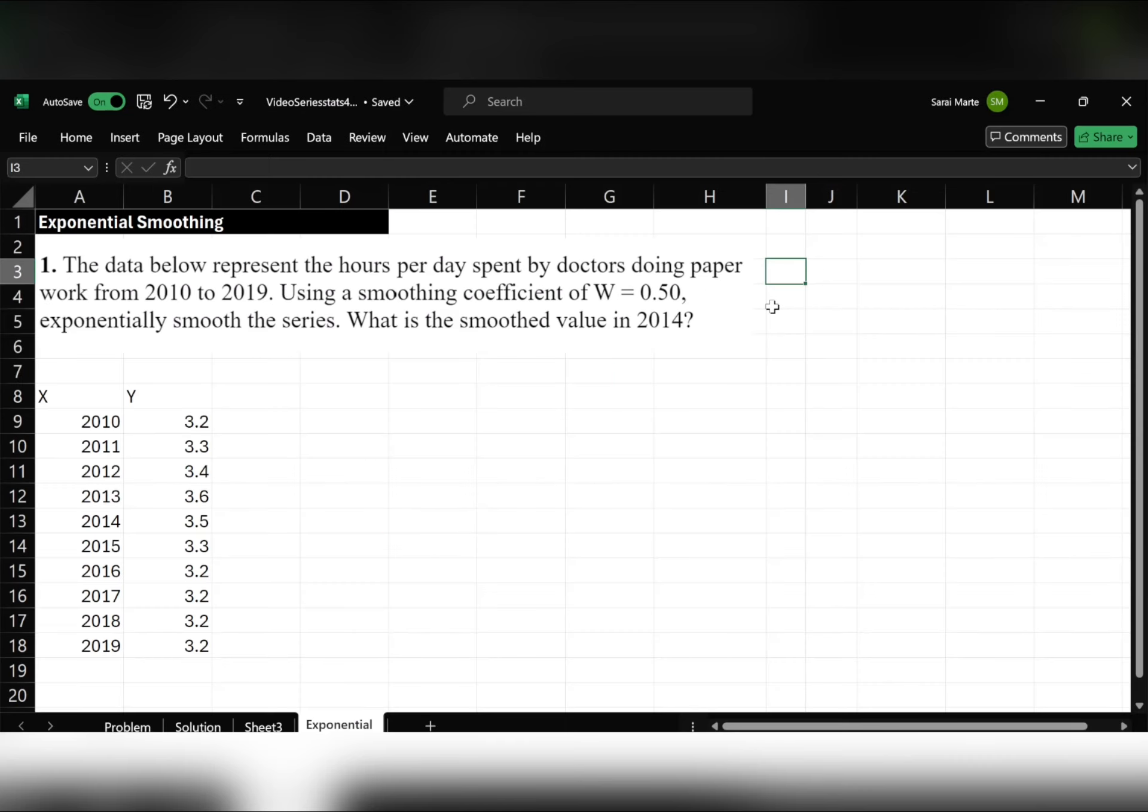So W equals 0.50. The first thing I do is exponential smoothing values given W.